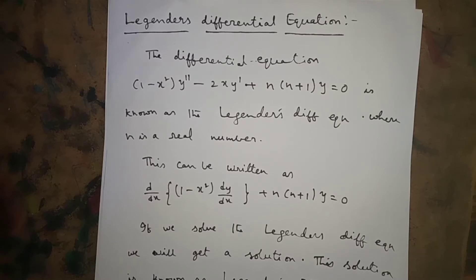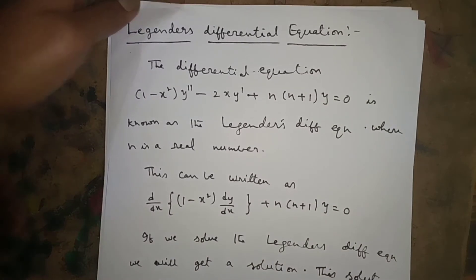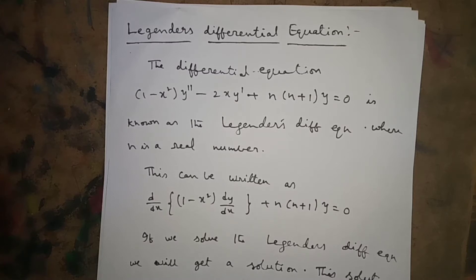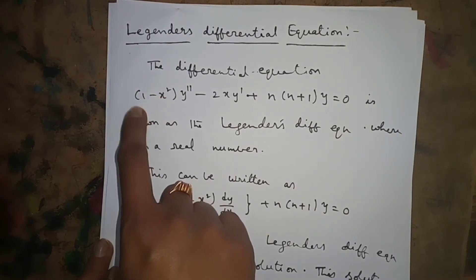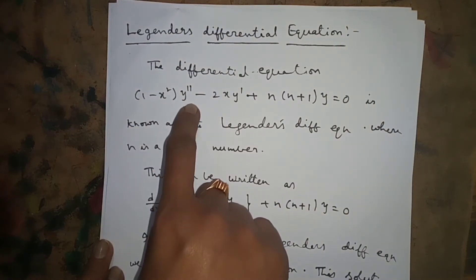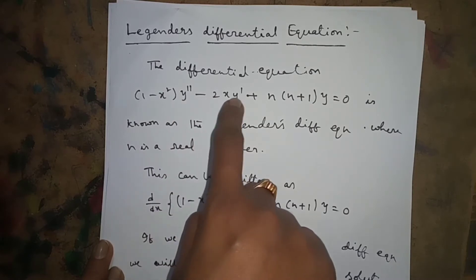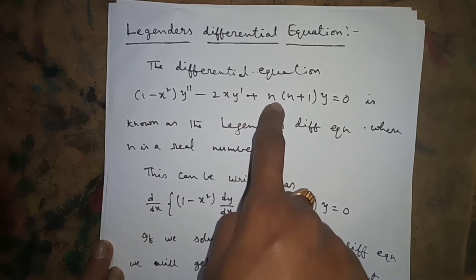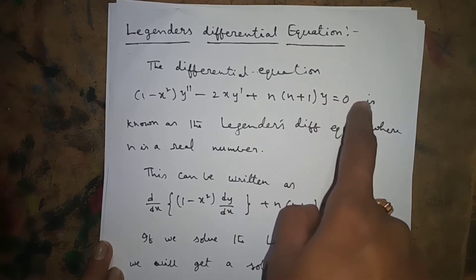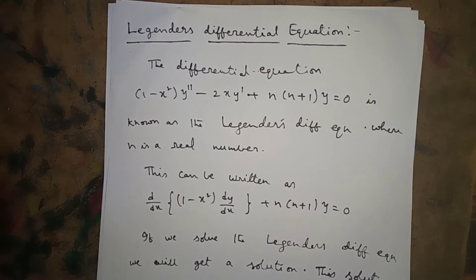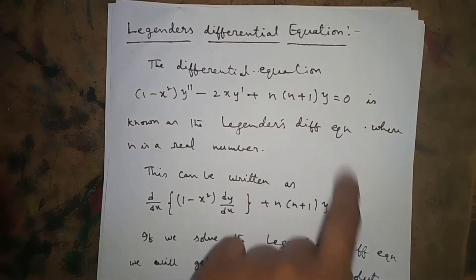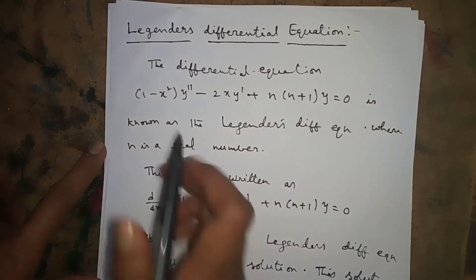Hello everyone. Today I am going to explain about Legendre's Differential Equation. The differential equation in the form of 1 minus x squared into y double dash minus 2xy dash plus n into n plus 1 into y is equal to 0. This equation is known as Legendre's Differential Equation where n is a real number.